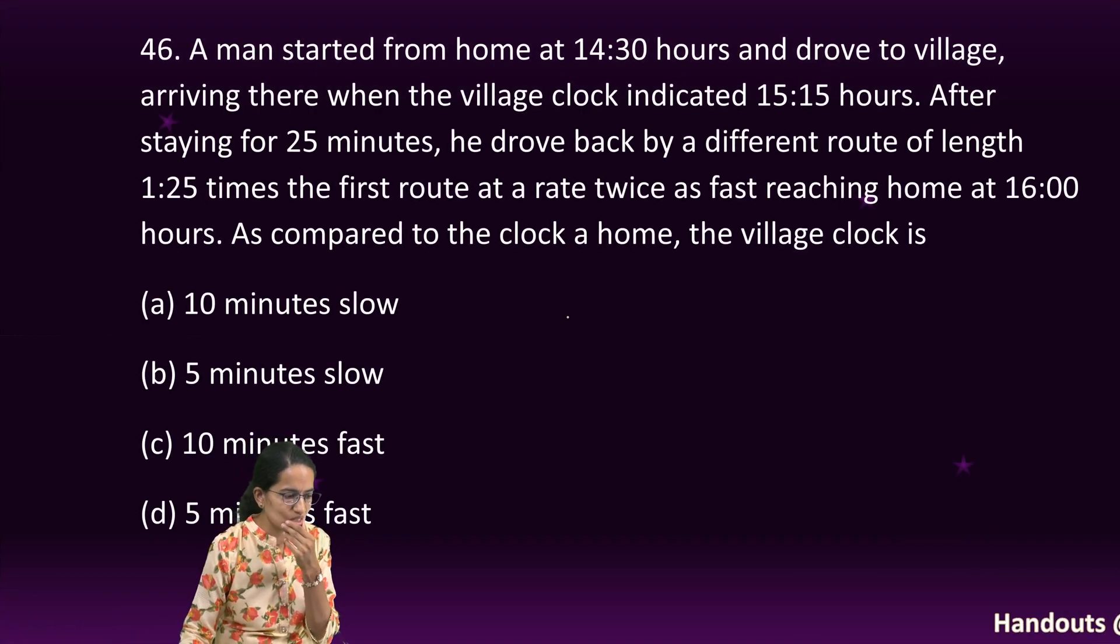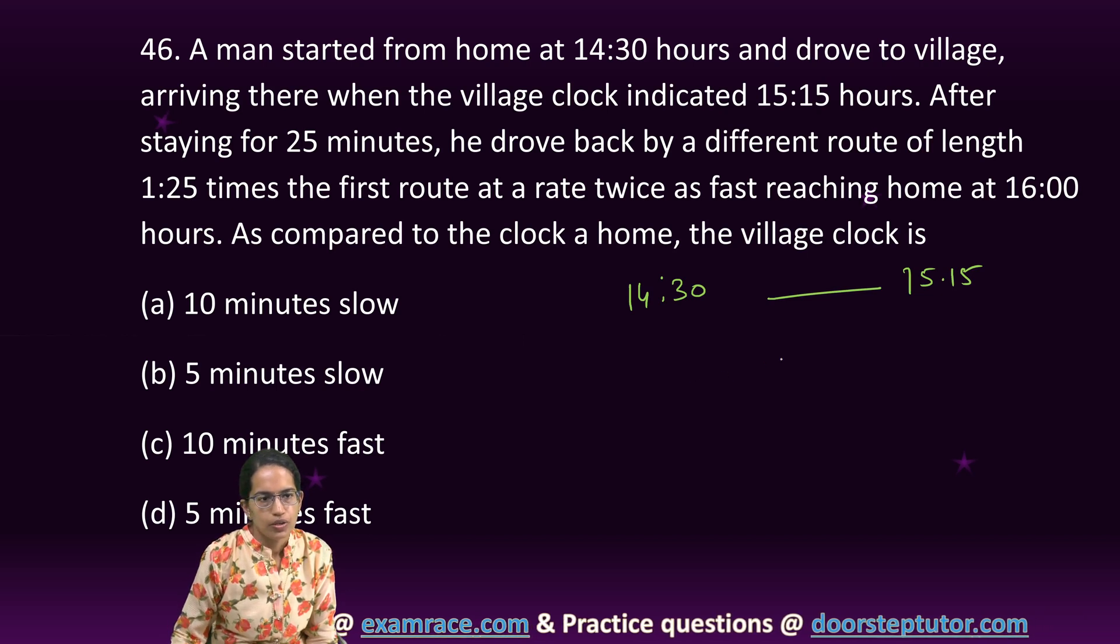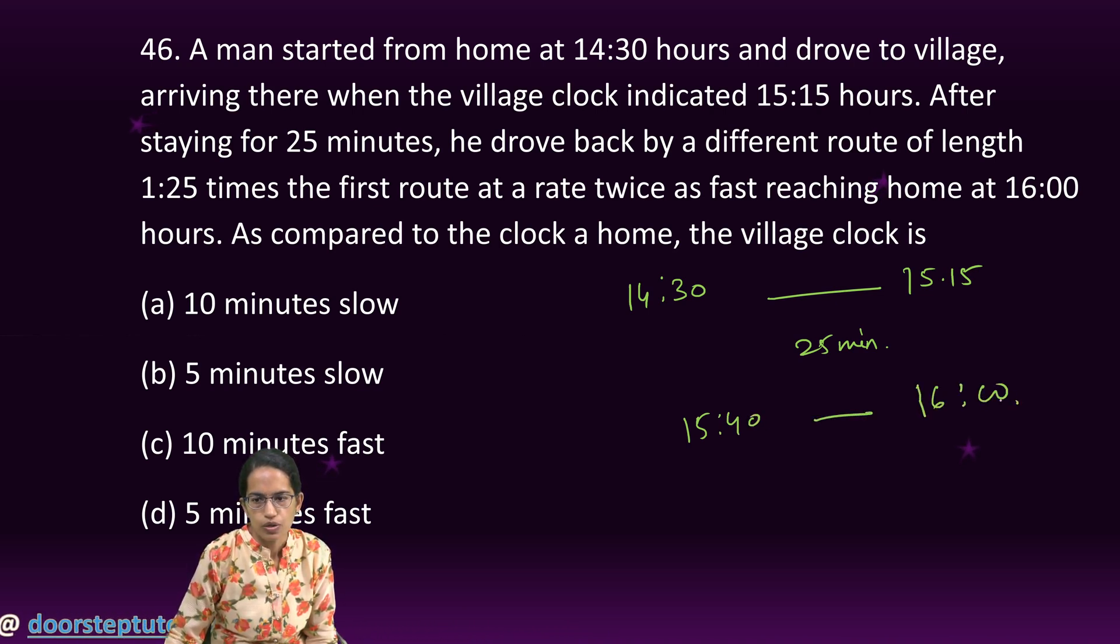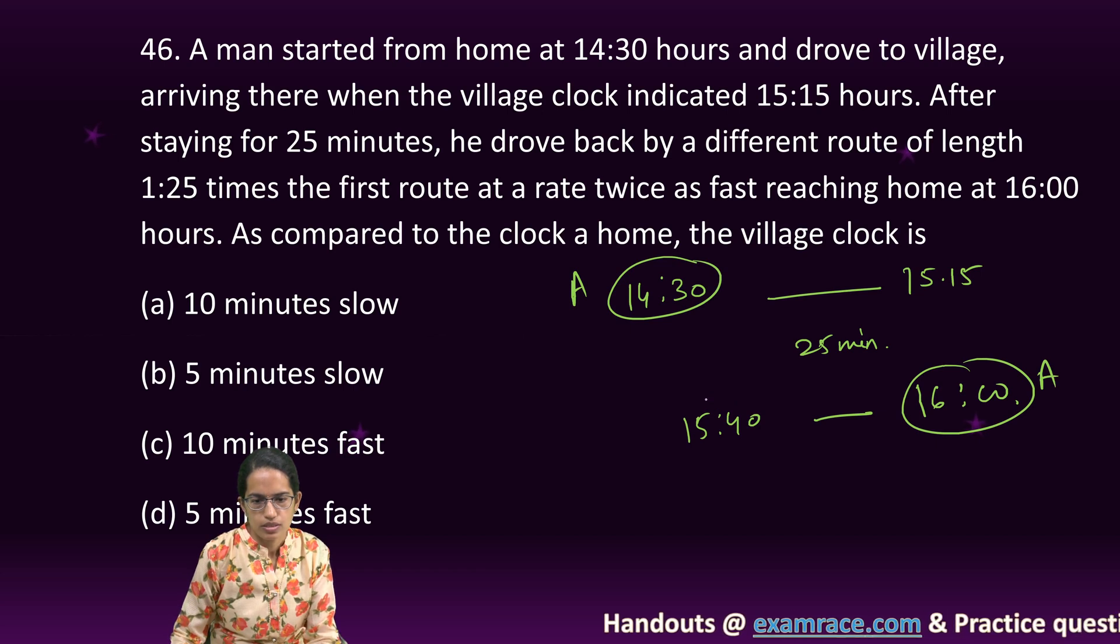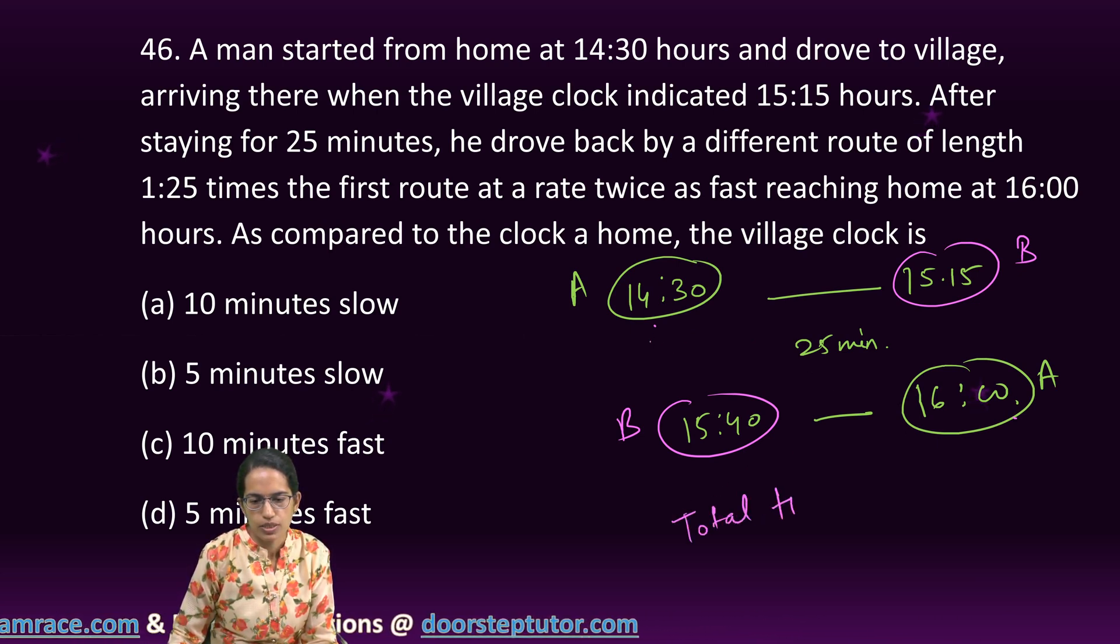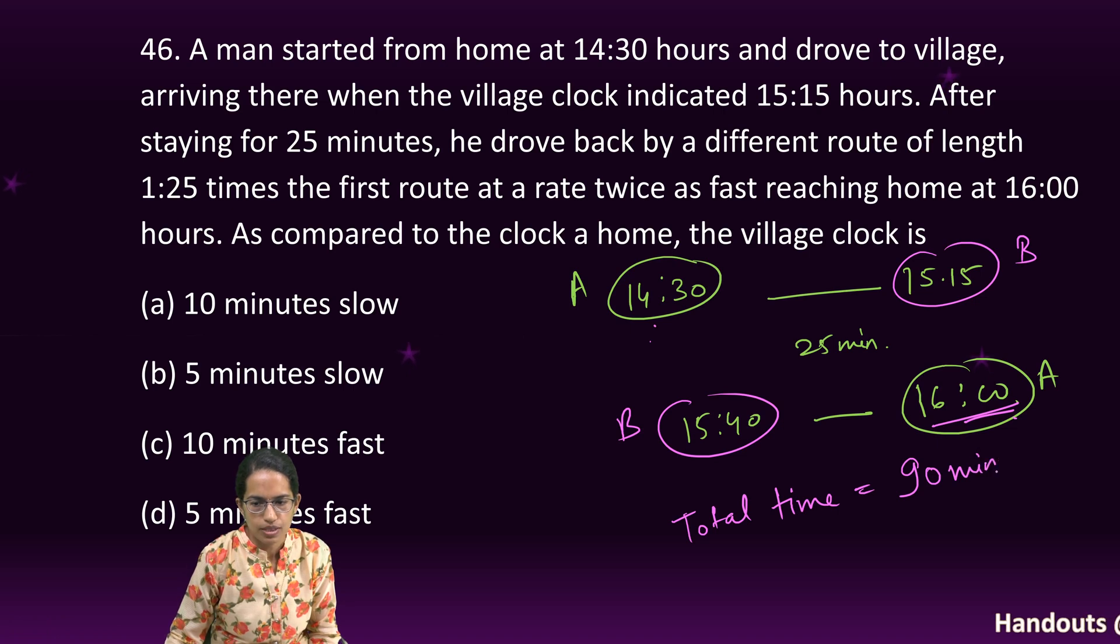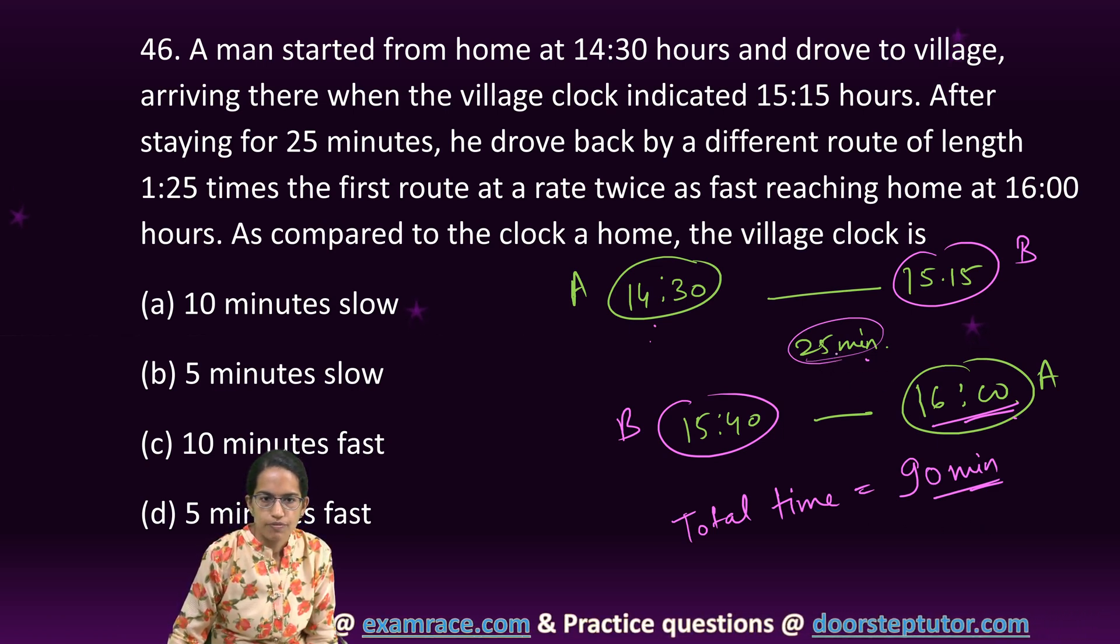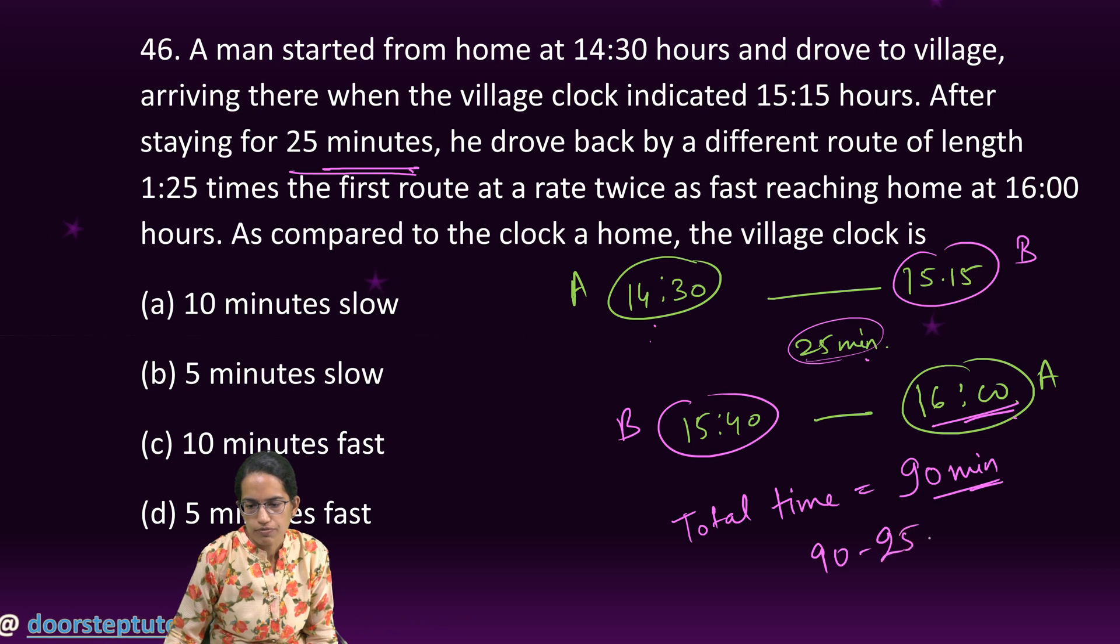The next question is an interesting question. Now here the most important thing is two clocks are there. The person starts at 540 and reaches at 16 o'clock. Now this clock and this clock is the same clock. So it is a and a. The other two clocks, these two clocks are b clocks. So first I find out the total time traveled. So total time traveled is 1600 minus 1430 that is 90 minutes. Now this 90 minutes minus this waiting time would be the total travel time. So 25 minutes was the staying time. So total time was 90 minus 25. So 90 minus 25 is 65.